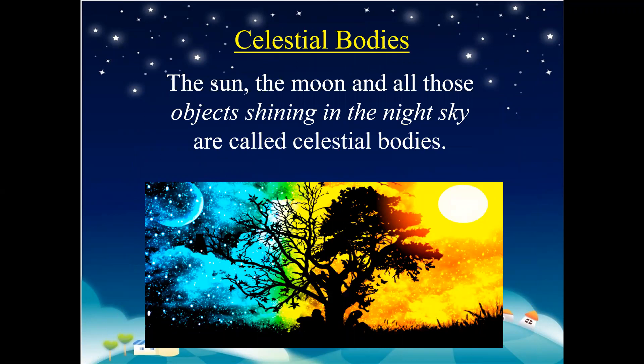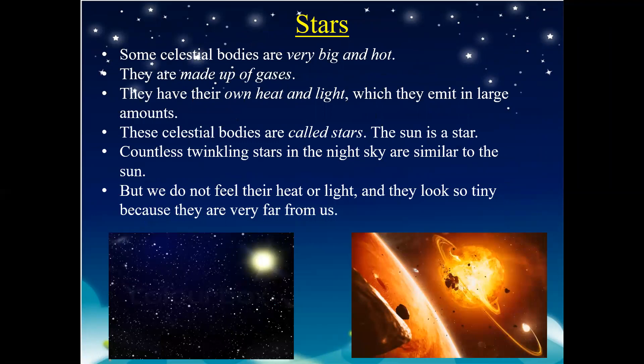First, let us understand what are celestial bodies. The sun, the moon, and all those objects which shine brightly in the night sky are called celestial bodies. Some celestial bodies are very big and are hot as well. They are made up of gases and have their own heat and light which they emit in large amounts. These celestial bodies are called stars. You will be amazed to know that the sun, which can be seen so bright during the day, is also a star.